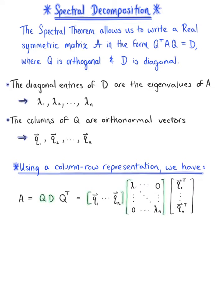Multiplying matrix Q and matrix D together, we can reduce this to the matrix whose column vectors are defined as lambda sub 1 times vector Q sub 1 through lambda sub n times vector Q sub n, multiplied by the transpose of matrix Q.